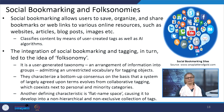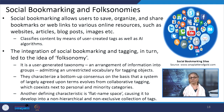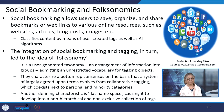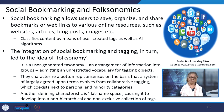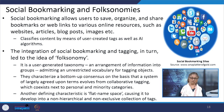Let us talk about social bookmarking and folksonomy. Social bookmarking allows users to save, organize, and share bookmarks or web links to various online resources such as websites, articles, blog posts, images, etc. It also classifies content by means of user-created tags as well as AI algorithms. The integration of social bookmarking and tagging in turn led to the idea of folksonomy. Folksonomy is a user-generated taxonomy — an arrangement of information into groups admitting an unrestricted vocabulary for tagging objects. They characterize a bottom-up consensus in which a system of largely agreed-upon terms evolved from collaborative tagging, coexisting alongside personal and minority categories.